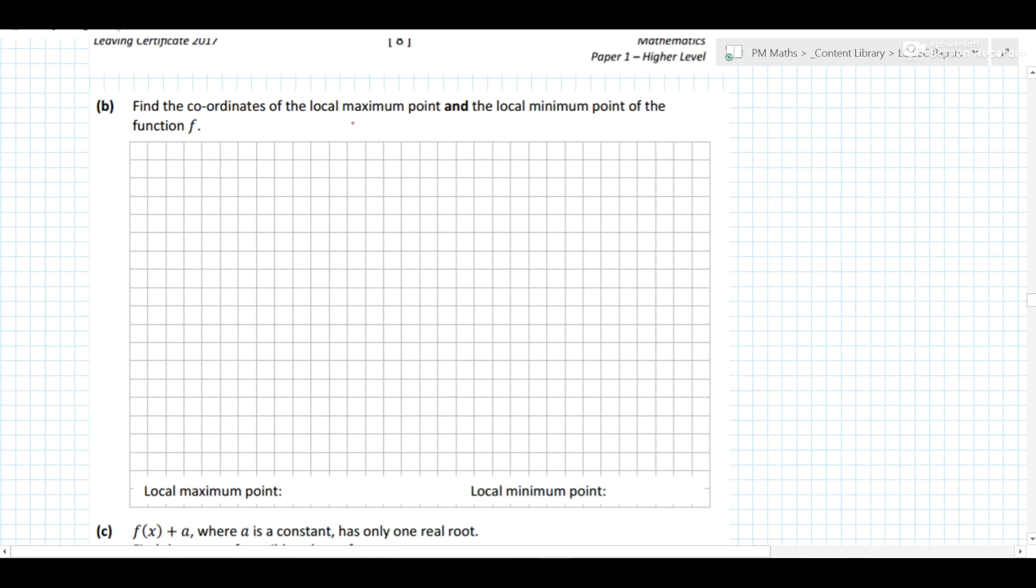Next part of the question. Find the coordinates of the local maximum point and the local minimum point of the function. Now local maximum and local minimum should be jumping out at you and screaming something. They should be screaming differentiation, maximum, minimum. So we know our function, or our y, is equal to 2x cubed plus 5x squared minus 4x minus 3. So if it asks for a max or a min, you should be differentiating and setting it equals to 0. 6x squared plus 10x minus 4.